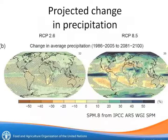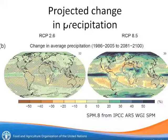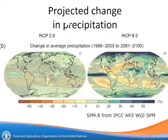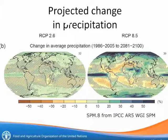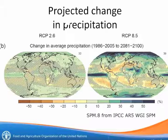Moving on to the next figure, this is precipitation projection in the future. The left-hand side is the low emission scenario and the right-hand side is the high emission scenario. You see a lot of spatial heterogeneity — there are areas that experience increase in precipitation, but neighboring areas may experience decrease in precipitation. This translates into the impacts of climate change on agricultural productivity, so we need to understand what's going to happen to the climate at local level in order to estimate those impacts.